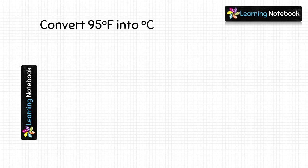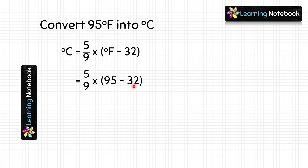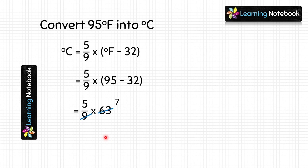Let's do the next question: convert 95 degrees Fahrenheit into Celsius. Let's use the same formula and put the value of Fahrenheit in this formula. We get 5/9 into (95 minus 32). First we will do subtraction, so 95 minus 32 equals 63. So we get 5/9 into 63.